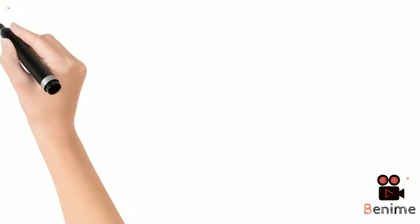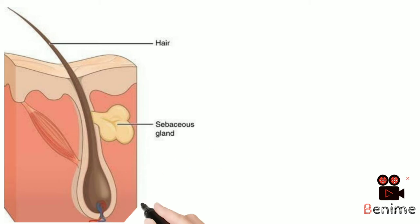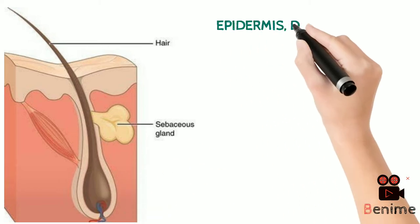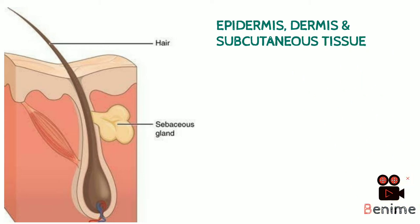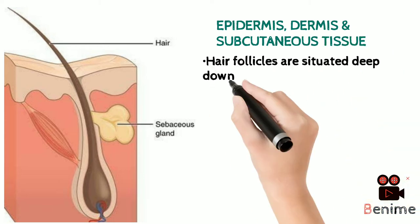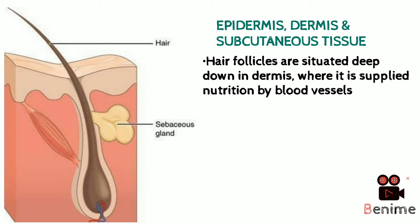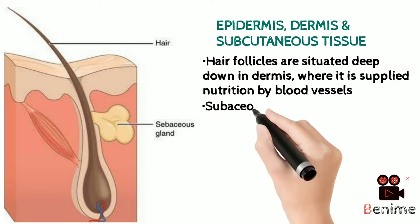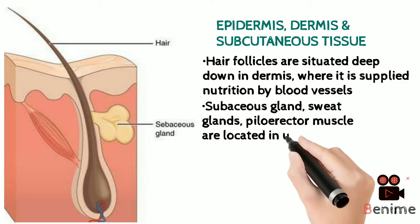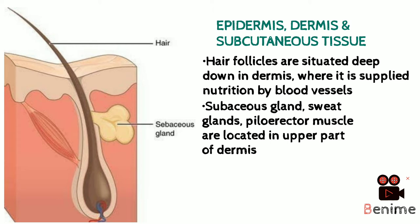Before jumping into the mechanism of acne formation, let's take an overview of the skin, which comprises three parts: epidermis, dermis, and subcutaneous tissue. Follicles are situated deep down in the dermis where they are supplied with nutrition by blood vessels. The sebaceous gland, sweat gland, and piloerector muscles are situated in the relatively upper part of the dermis.